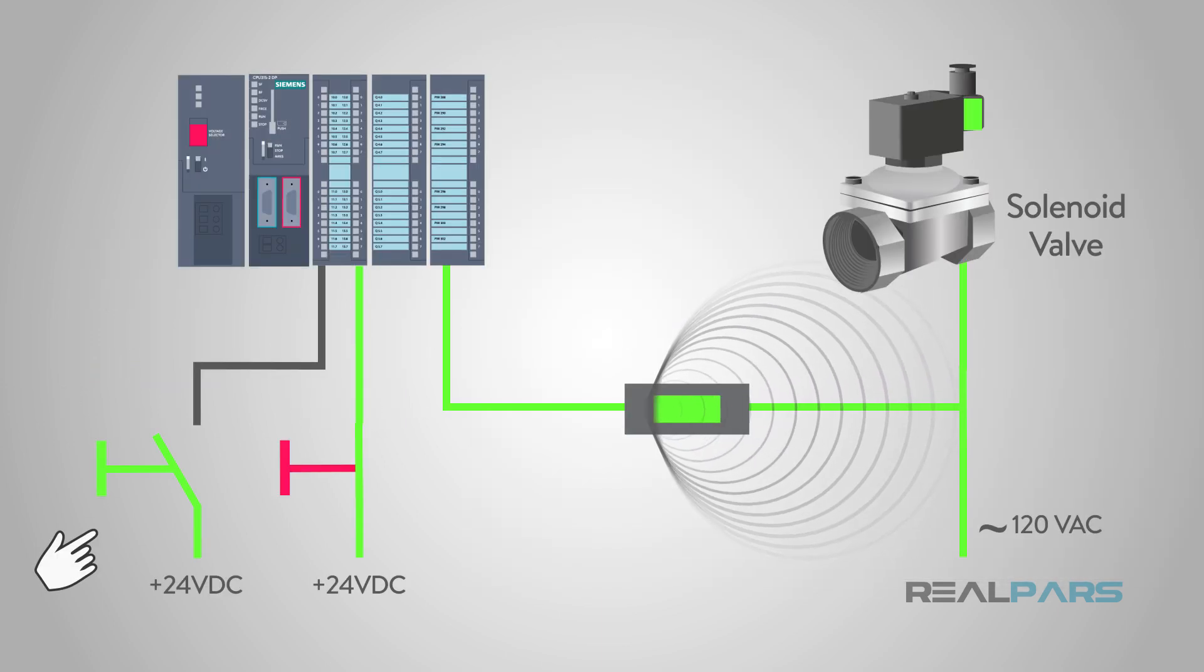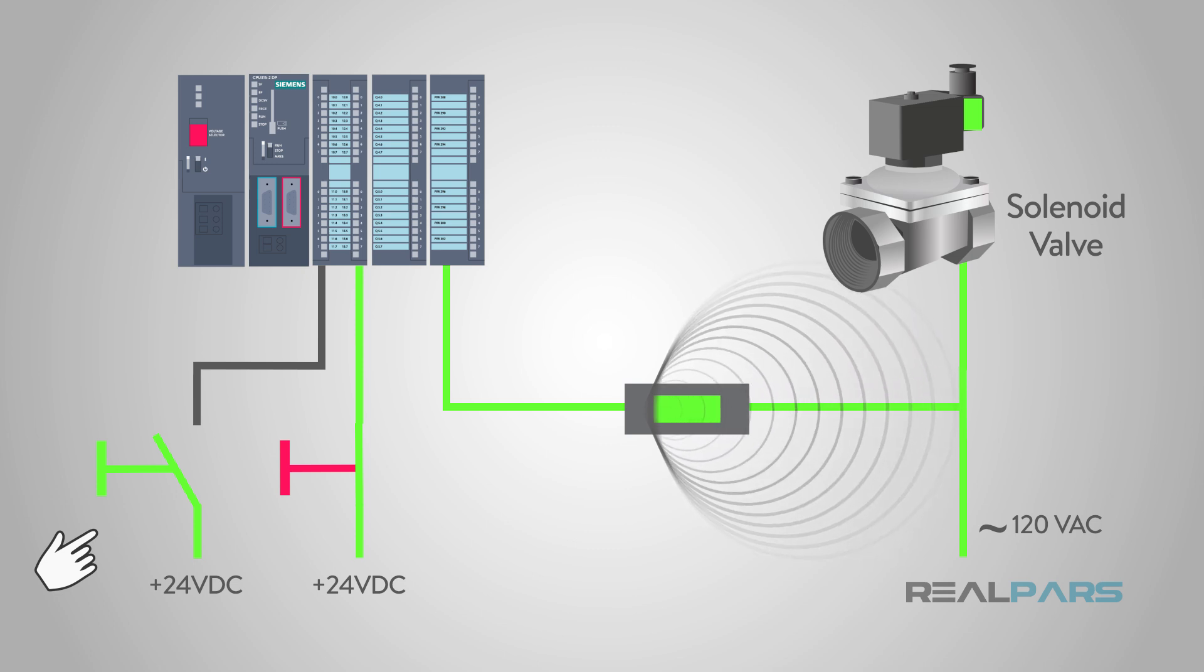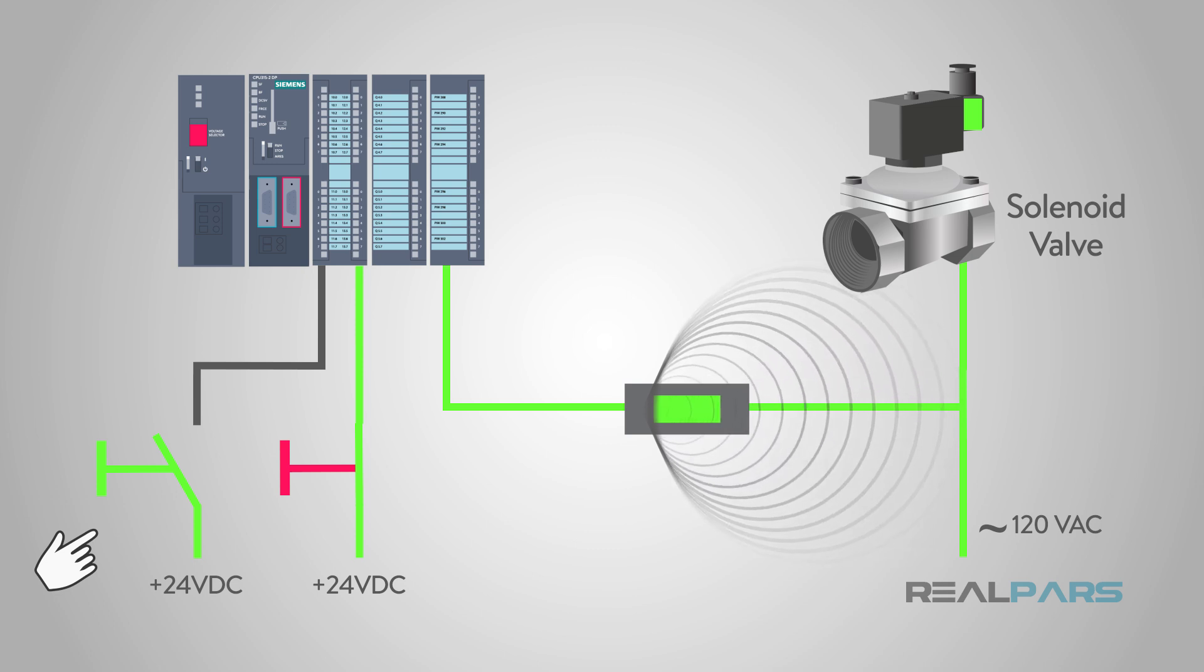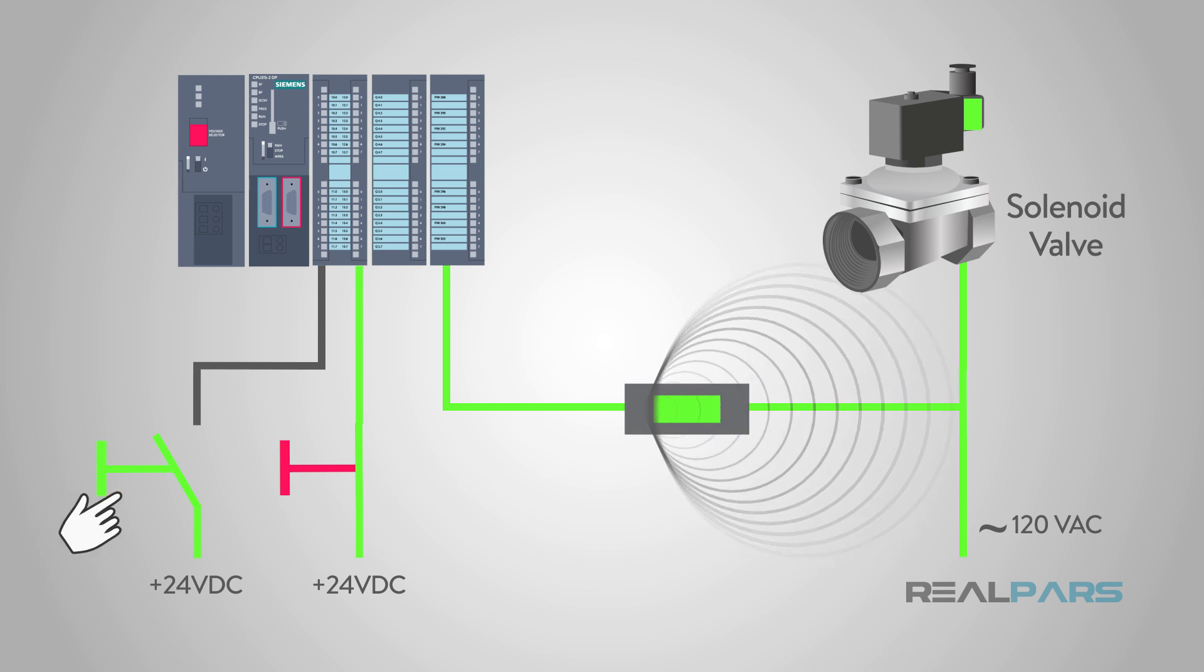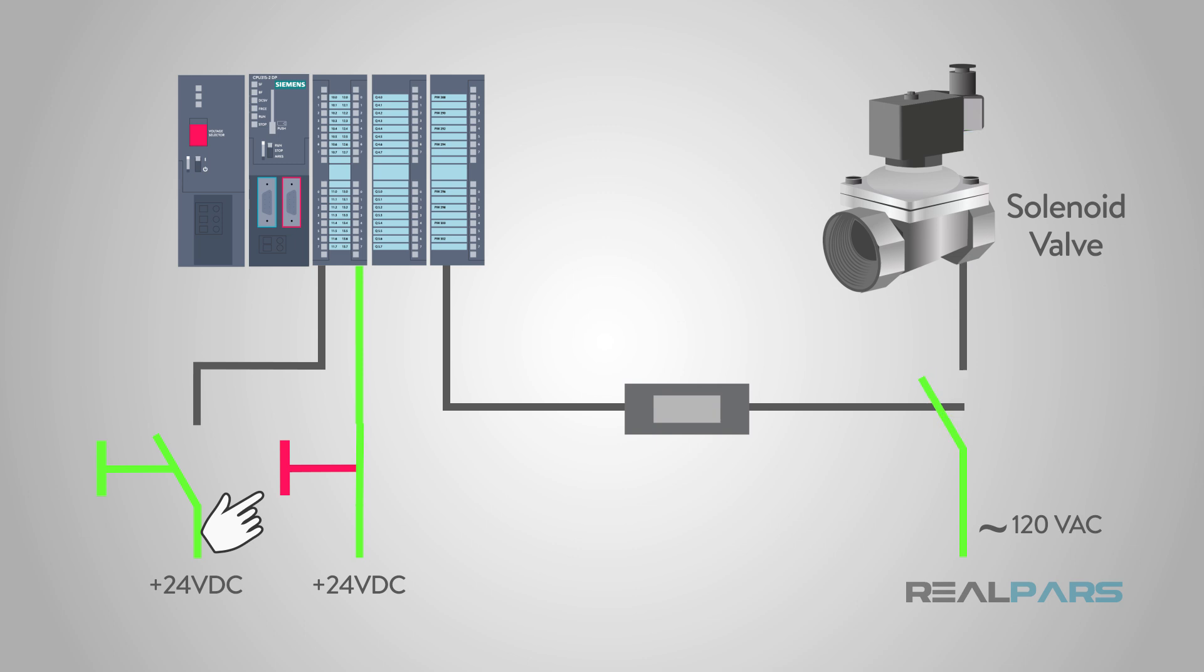Automation has to have many aspects working together in order to function properly. An automated process will continue its cycle until it receives a stop signal. That can come from a physical input, such as a stop button or sensor, or something programmed like a timer.